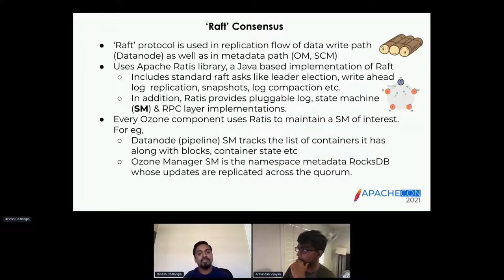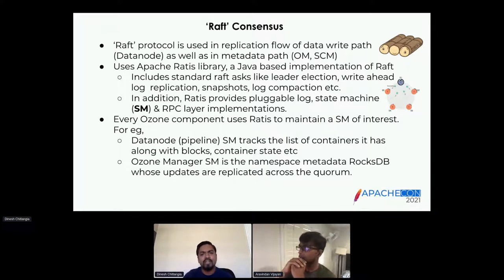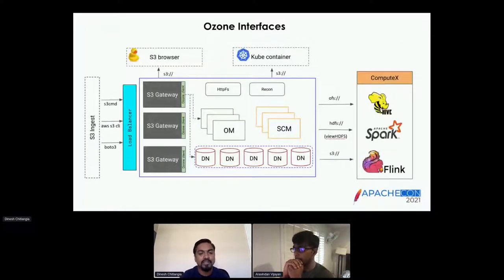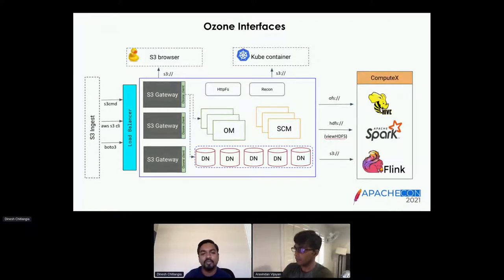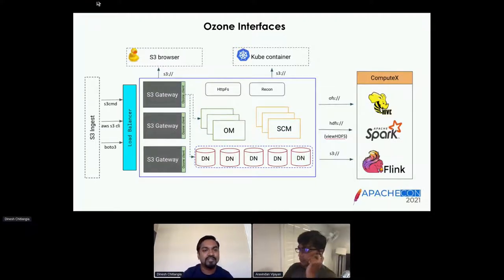Every Ozone component uses Ratis to maintain consistency and consensus. Arvindan will focus a lot on some of the key features and highlights, especially around the file systems, performance, and how insight is going to play a role.